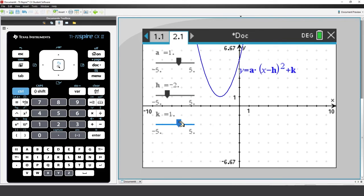One more slider to go. We notice that each parameter, a, h and k, can be used to transform our quadratic function.